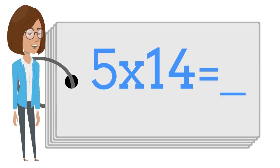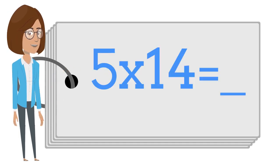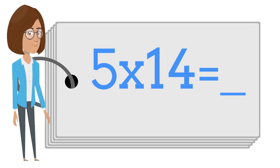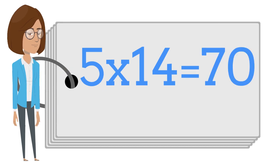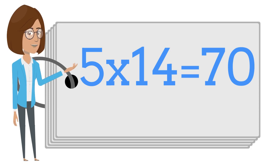Five times fourteen is? Say the answer out loud. Five times fourteen is seventy.